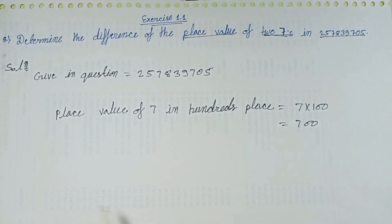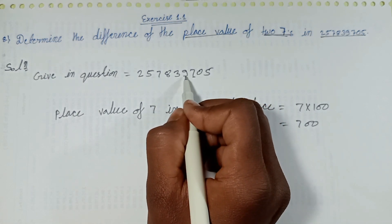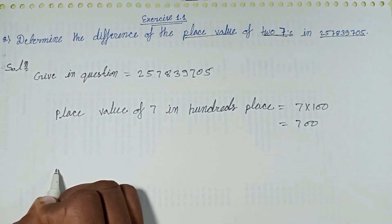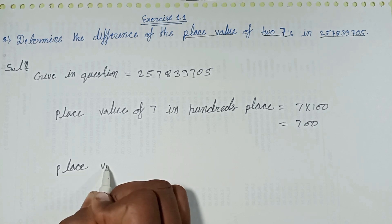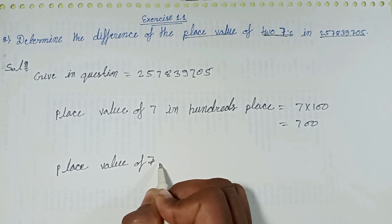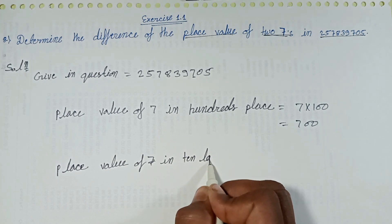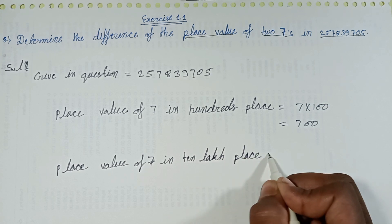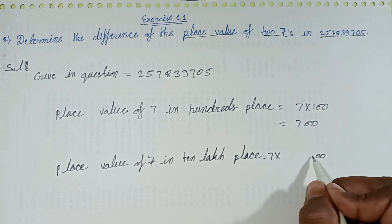Next, the second 7. Counting the places: 1, 10, 100, 1000, 10,000, lakh, 10 lakh. The place value of 7 in the 10 lakh place: 7 multiplied with 10 lakh.